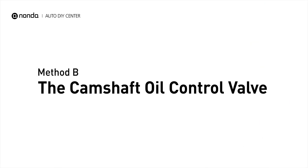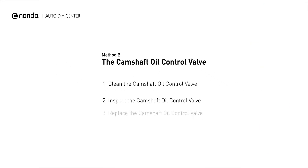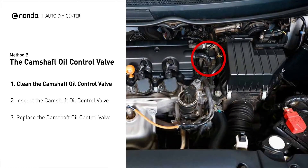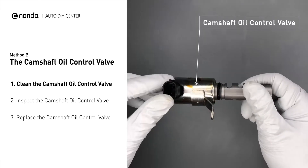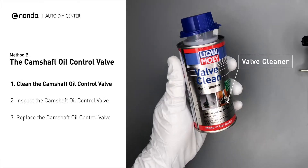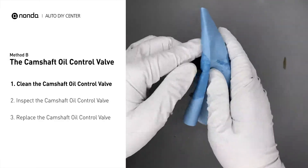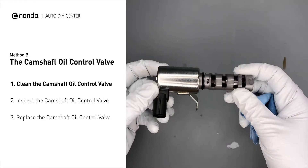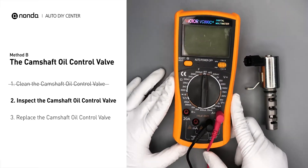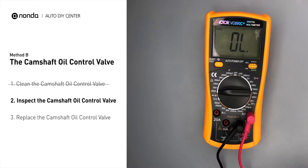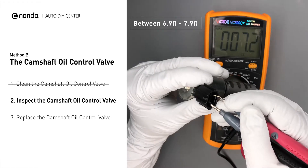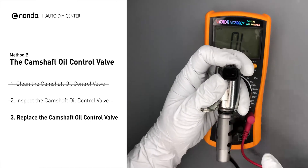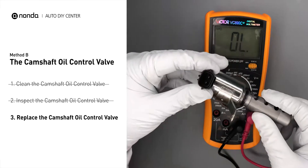Method B: the camshaft oil control valve. The camshaft oil control valves are usually located in cars that have engines with variable valve timing systems in them. First, carefully remove the camshaft oil control valve from the engine. Use a valve cleaner to clean the camshaft oil control valve. Then use a multimeter to perform a test on the camshaft oil control valve. In ambient temperature of 68 degrees Fahrenheit, the valve resistance is between 6.9 ohms to 7.9 ohms. If you do not get a reading, this indicates that the camshaft oil control valve is faulty and needs to be replaced.